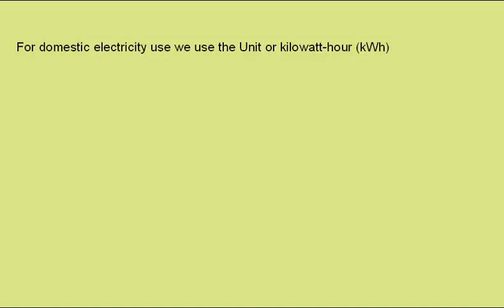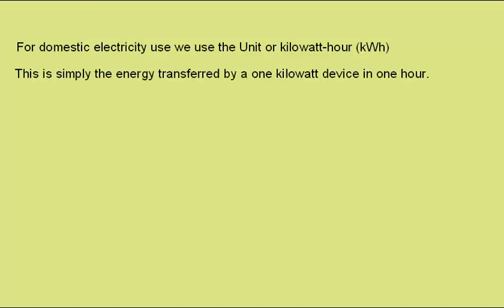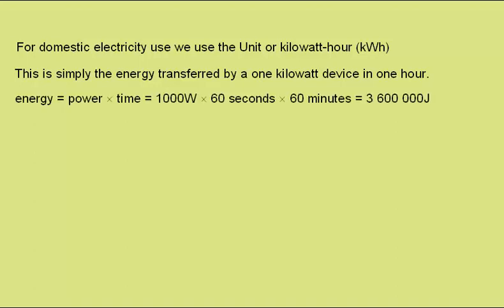When measuring the energy used by a domestic electricity system, we would use the unit the kilowatt hour. This is simply the energy that would be transferred by a one kilowatt device, such as an electric heater, if it was on for one hour. To work out what one kilowatt hour is in joules, we use the equation that energy is equal to power times time. The power is one kilowatt, or one thousand watts, multiplied by sixty seconds to give us the energy used in a minute, multiplied by sixty minutes to give us the energy used in one hour. This comes out at three point six million joules.